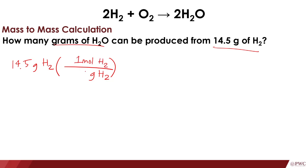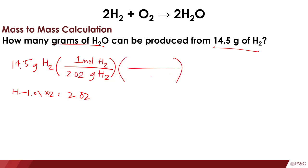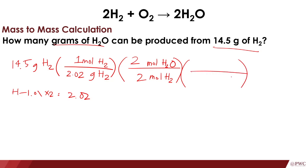From grams of H₂, convert to moles of H₂. The molar mass of H₂O is needed — that's 1.01 times 2, which equals 2.02. After converting to moles of H₂, apply the molar ratio using the balanced chemical equation: for H₂ the coefficient is 2, and for H₂O it is also 2. Then from moles of H₂O, convert to grams of H₂O.